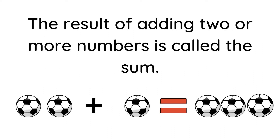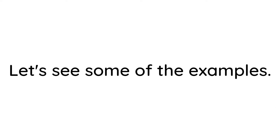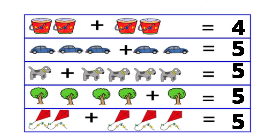For example, the sum of two and one is represented as two plus one. The result of adding two or more numbers is called the sum. Examples: two tubs plus two tubs equals four tubs; three cars plus two cars equals five cars; one dog plus four dogs equals five dogs; four dogs plus one dog equals five dogs.